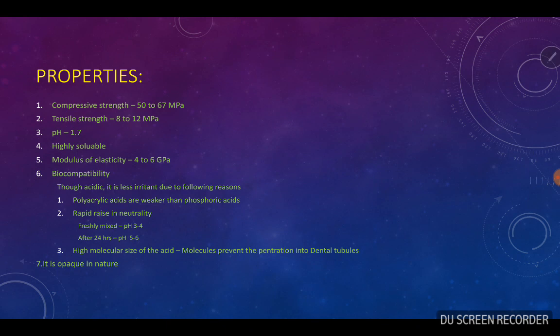Biocompatibility: though the cement is acidic with a pH of 1.7, it causes less irritation for the following reasons. First, polyacrylic acids are weaker than phosphoric acids. Second, there is a rapid rise in neutrality — initially the pH is 1.7, but the pH of freshly mixed cement is 3 to 4, and after 24 hours the pH will be 5 to 6. Third, the high molecular size of acid molecules prevents penetration into the dentinal tubules, hence preventing transmission of impulses and leading to less sensitivity.